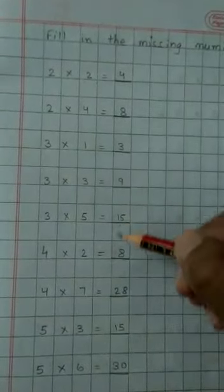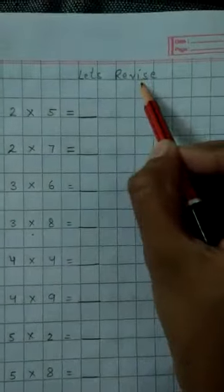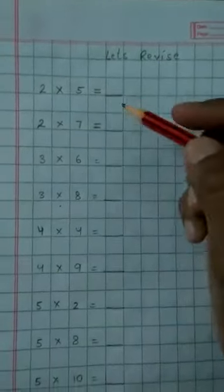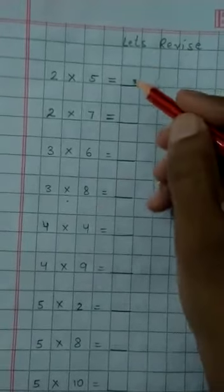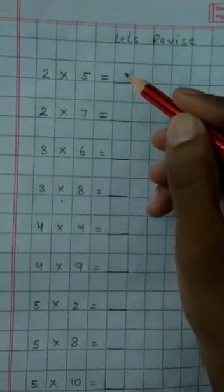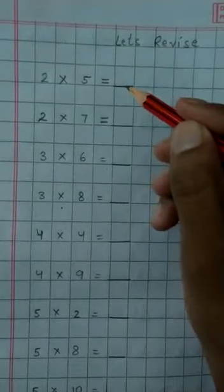So, you will be underlining all the answers. Then, in the next page you will be writing a new heading. Let's revise. In this page you can see questions are given. You have to write the answers. This page you will be doing by yourself.